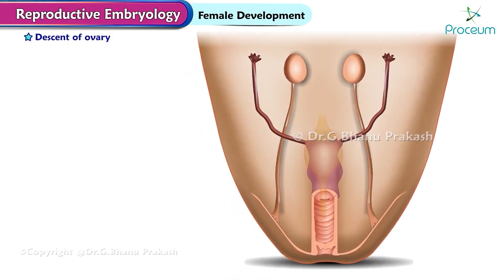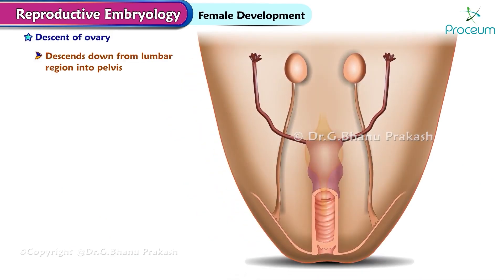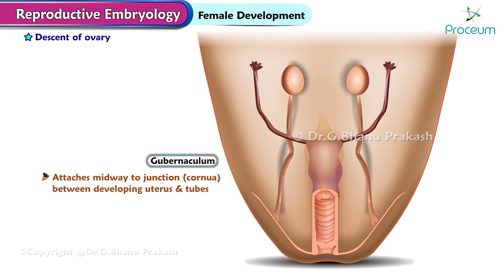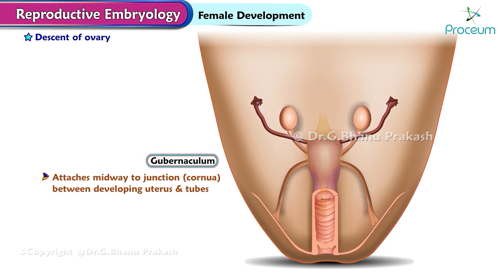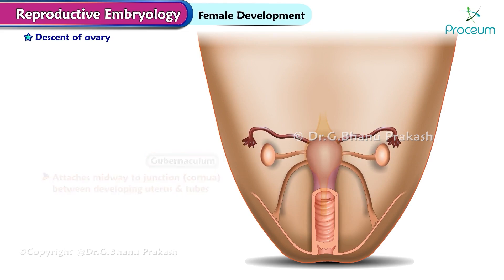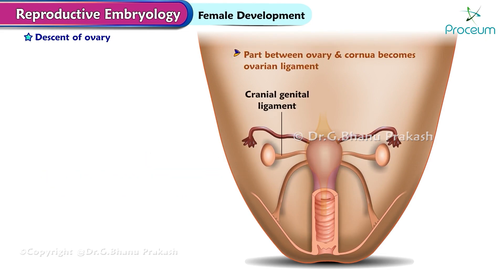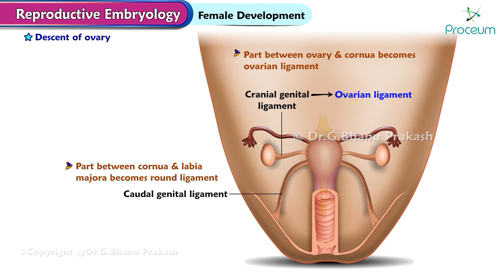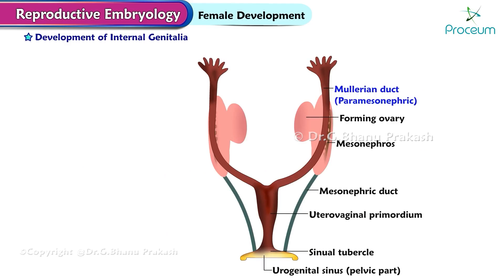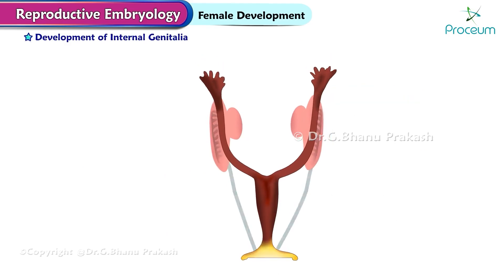Descent of the ovary: similar to the testis, the ovary also descends from the lumbar region into the pelvis. The gubernaculum is formed from the ovary to the labia majora, but it attaches midway at the junction (cornua) between the developing uterus and tubes. The part between the ovary and cornua becomes the ovarian ligament. The part between the cornua and labia majora becomes the round ligament.